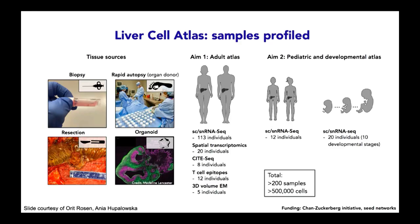This project is receiving liver tissue from multiple sources, including biopsies, whole organs, parts of organs discarded from surgeries, and other tissue sources. They are using a range of single-cell genomics, spatial and imaging technologies — including spatial transcriptomics, technology for mapping immune cell subsets such as CITE-seq, technology for mapping T cell epitopes, and 3D volumetric electron microscopy — to ultimately create a single-cell resolution 3D spatial and molecular human liver map.